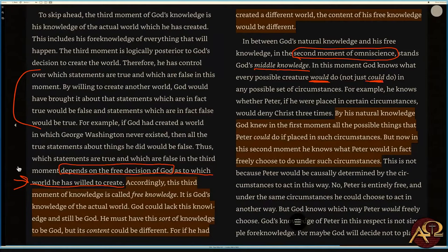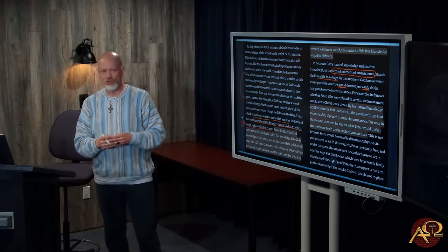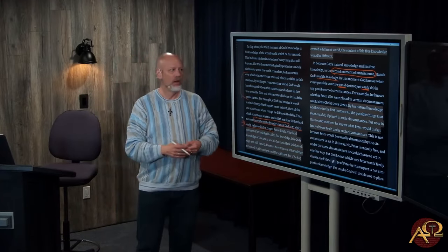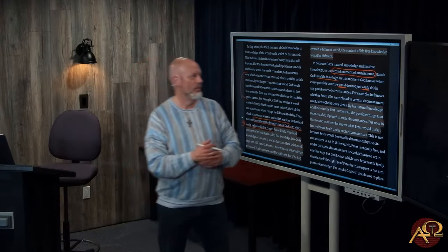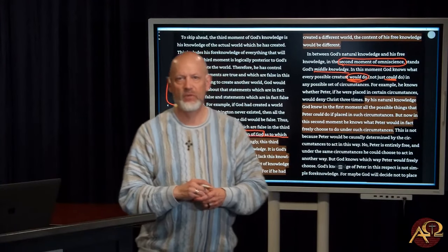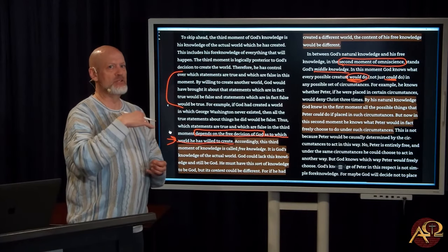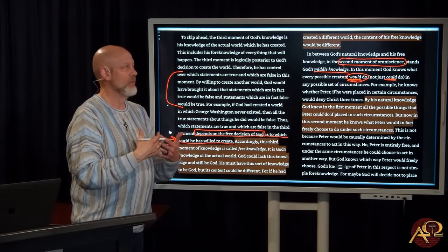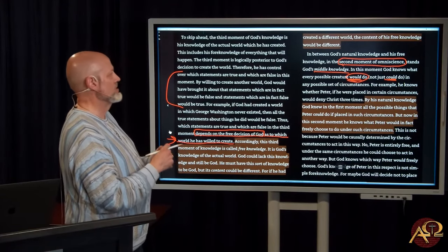It's not just a hypothetical that because God makes creatures with two legs and two arms that can run fast, that a certain person in a situation could run away. But he knows that they would, in a certain situation, run away. So there's more to it. It's not just what is possible in light of what he's chosen to create, but what would happen in any set of possible circumstances.